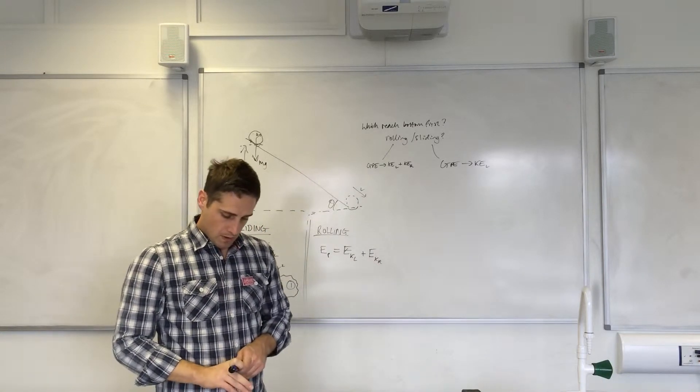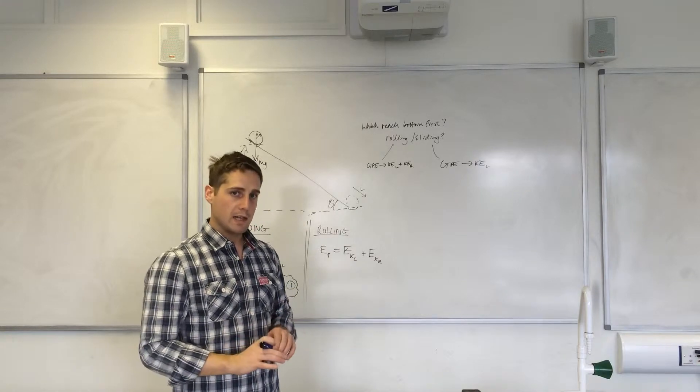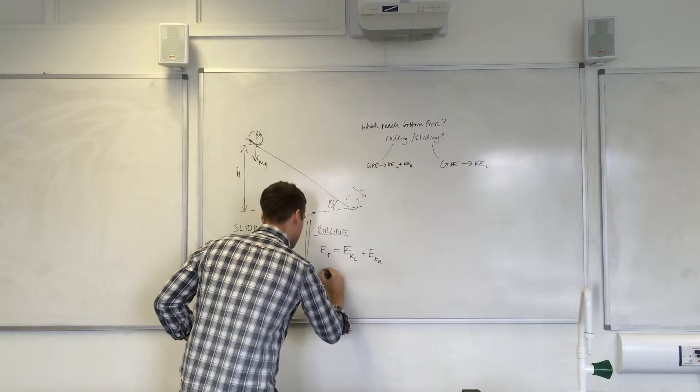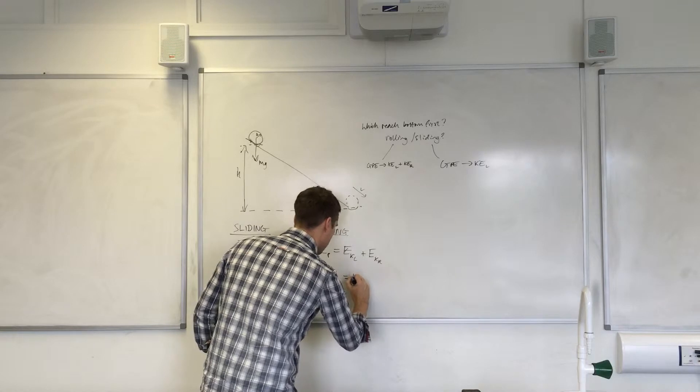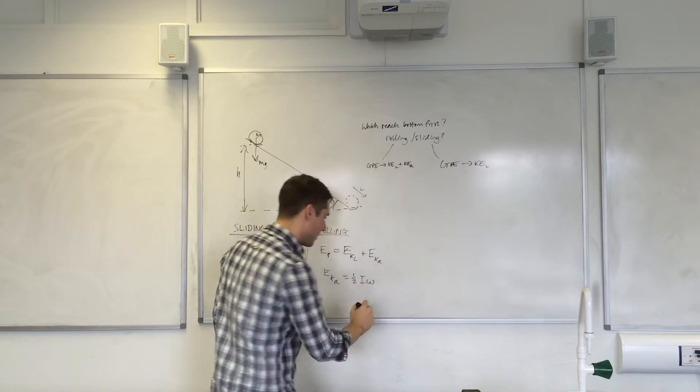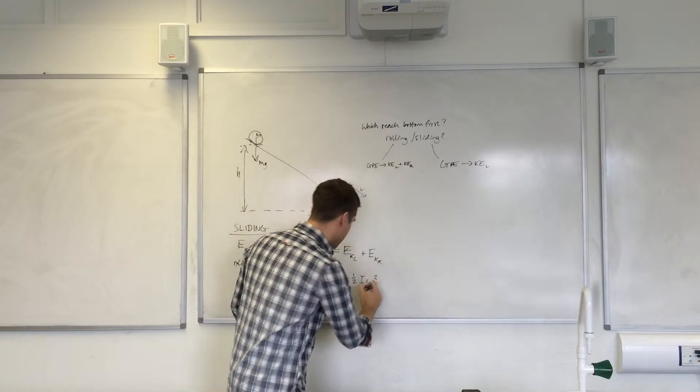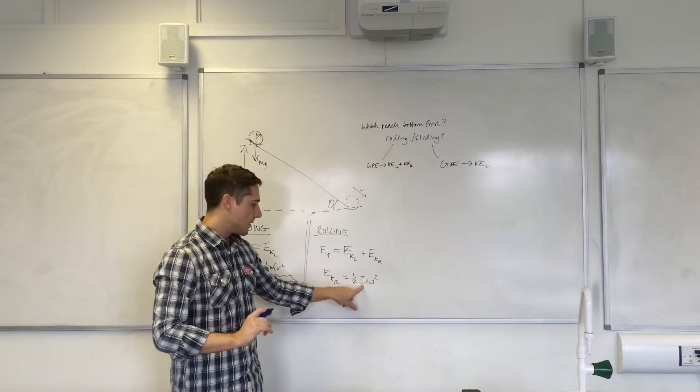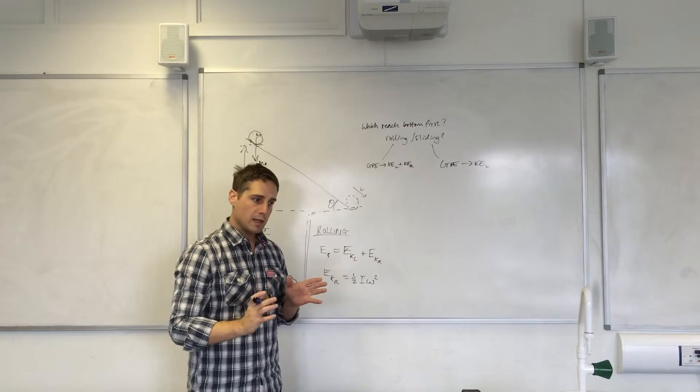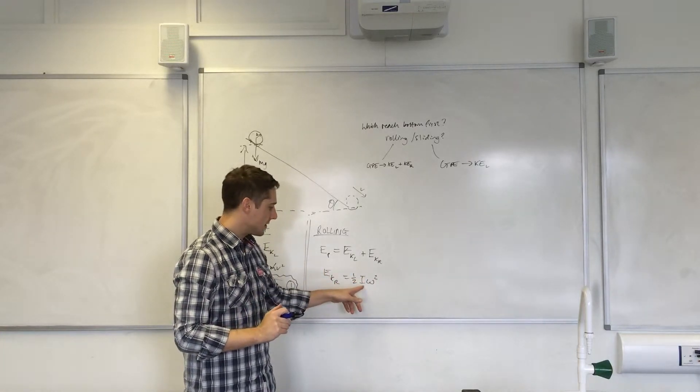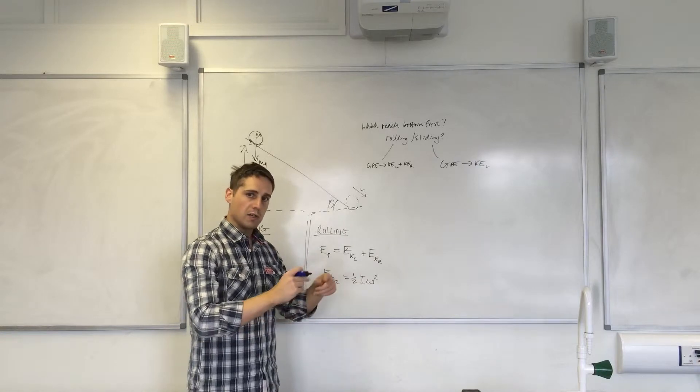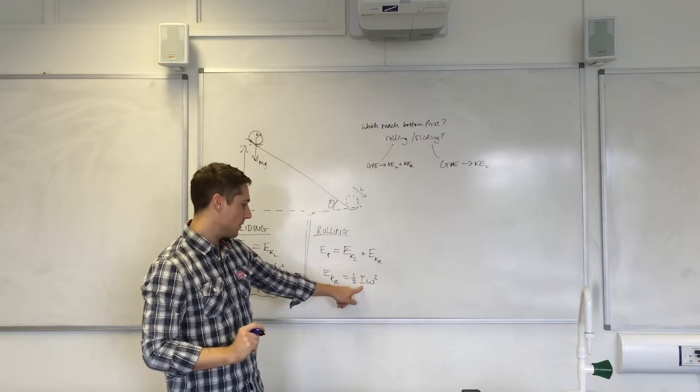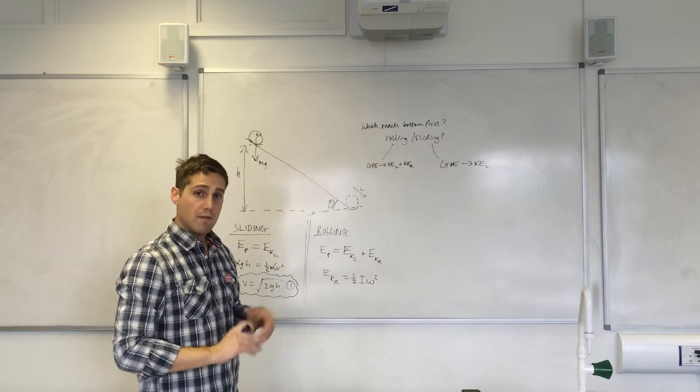Now the rotational kinetic energy has a similar form to the linear one, and what it's equal to is a half I omega squared. Now the terms here: that's the moment of inertia that talks about mass. Mass talks about how hard it is to accelerate something with a force; this talks about an object's resistance to being rotated. And this is the angular velocity—we're familiar with that term, but not with this term.